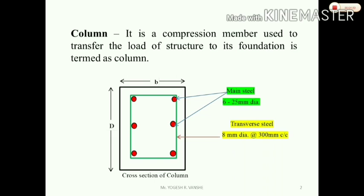There are two types of steel in a column. The first one is the main steel, and the next one is the transverse steel. The main steel is of circular bar shape, defined by the number of bars and bar diameter — for example, 25 mm diameter. The transverse steel means the links, similar to stirrups in a beam. There is a diameter and there are two links, with a defined pitch distance.